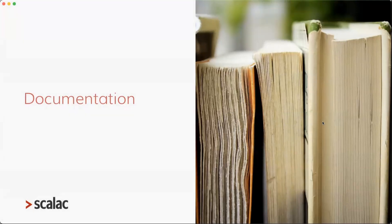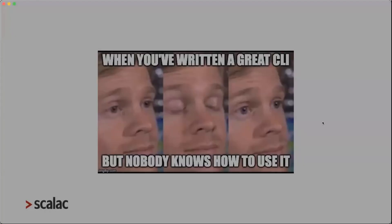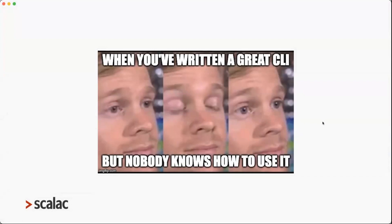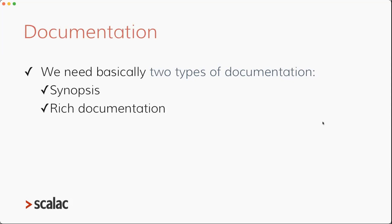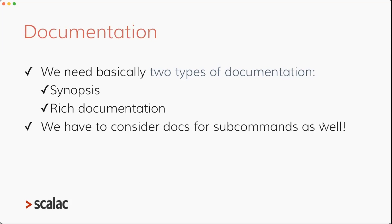There is also validation, and besides all of this, we also need to handle documentation. Because it doesn't make too much sense to have a great CLI with lots of options, variations, and validations if the user doesn't know how to use it. For CLI apps, we basically need two types of documentation: a synopsis — short summarized documentation — and rich documentation, detailed documentation the user can refer to when they need more explanation about how to use the commands and subcommands. And if we have subcommands, we need to consider documentation for each subcommand as well.